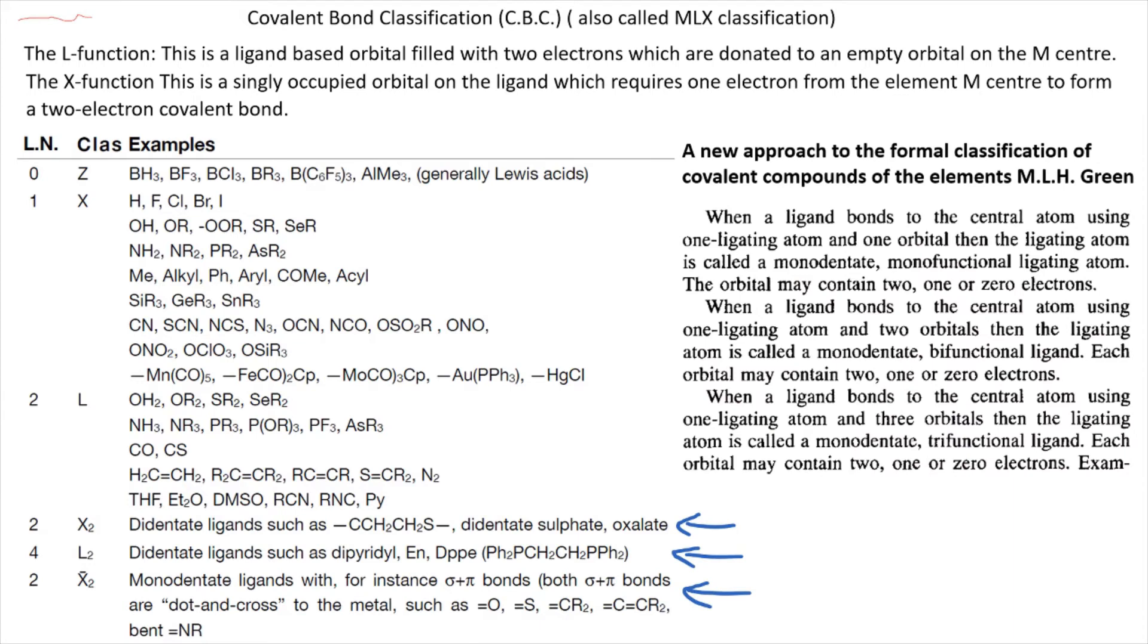With L ligands we have a similar situation, but basically we have two atoms that contribute lone pairs to the metal. With X2 we have two atoms that each contributes one electron to the metal, like sulfur and carbon. The difference between X2 and X2 bar is that with X2 bar there is a single atom that uses two half-filled orbitals to bind to the metal, so it's one liganding atom, monodentate, bifunctional.